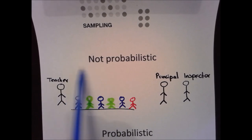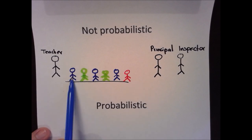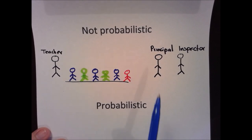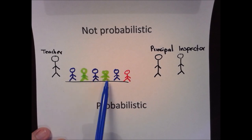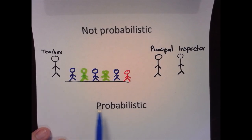This is called non-probabilistic. Probabilistic means that each one of the students will have the same opportunity to present the test. In a probabilistic method, the teacher could choose any student — this one, this one, or this one. They all have the same opportunity to present the test, so this is going to be probabilistic.